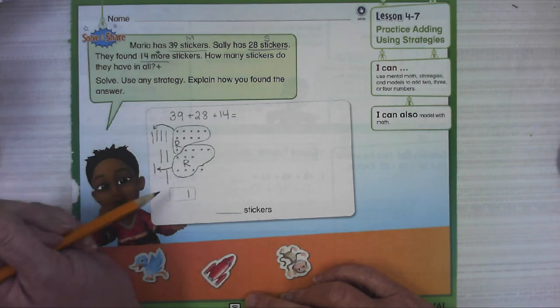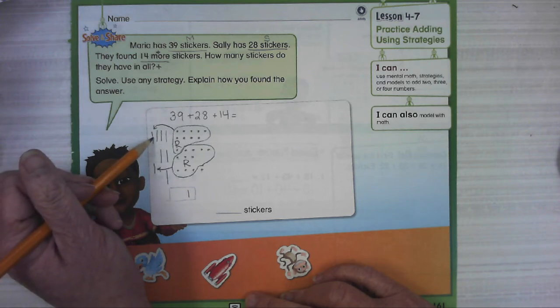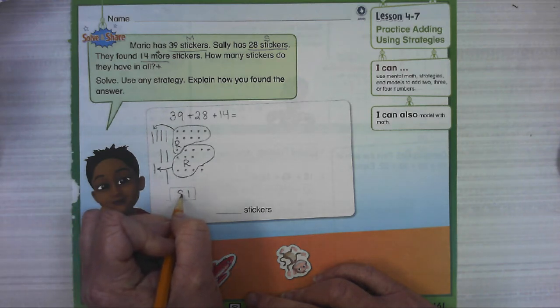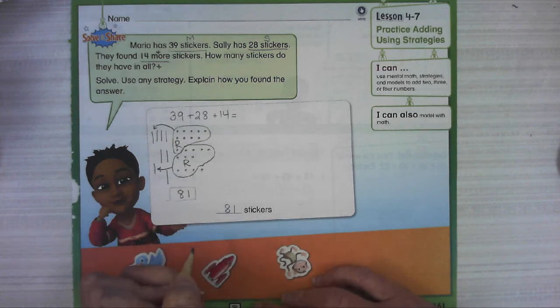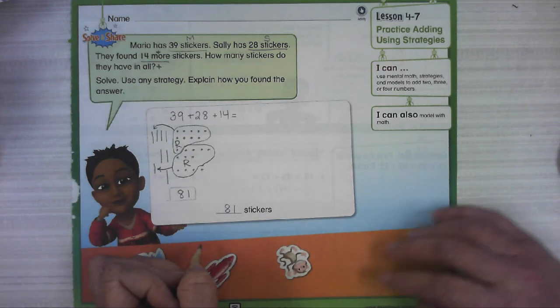And then in the tens place, I'm going to count all of my tens, including the ones we just put in here. So one, two, three, four, five, six, seven, eight tens. So I found that Maria and Sally have 81 stickers altogether.